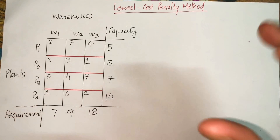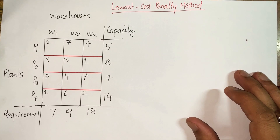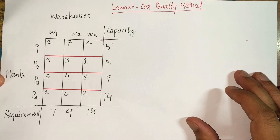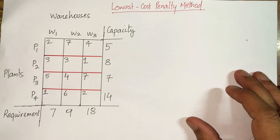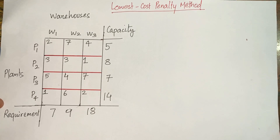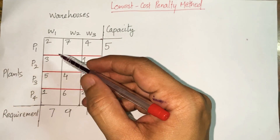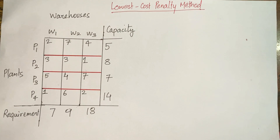In this video I'm going to talk about the Lowest Cost Penalty Method of solving a transportation problem. I previously used the Northwest Corner Rule to solve the same problem. In this method, we find the minimum cost cell and start allocating units from that cell, rather than starting from one fixed corner.